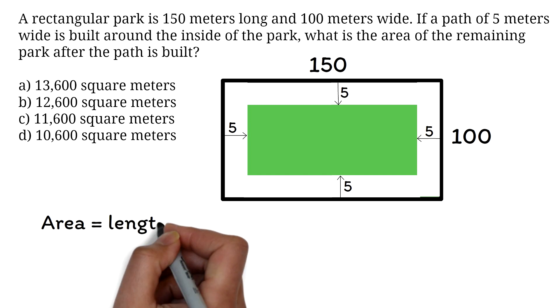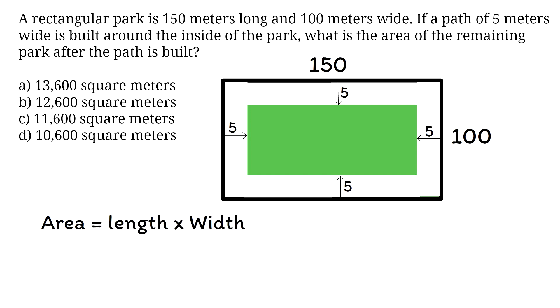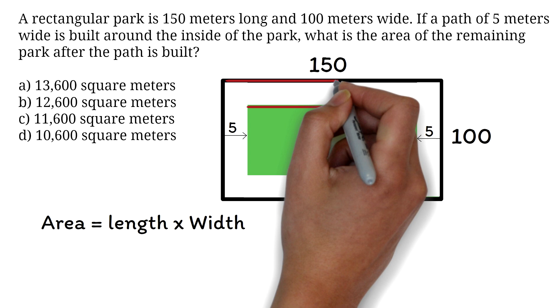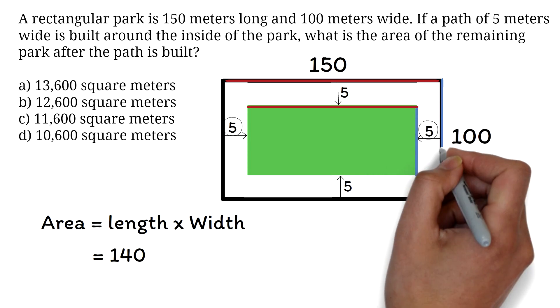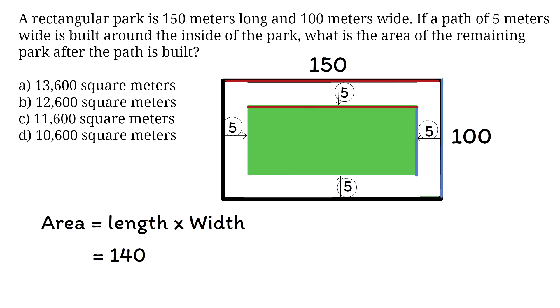Area of a rectangle is length times width. The new length of the park will be the 150 minus this 5 and this 5. So, the length is 150 minus 10, which is 140 meters. The new width is 100 minus this 5 and this 5. The width is 100 minus 10, which is 90 meters. We multiply. 140 times 90 is 12,600. So, the correct answer is B, 12,600 square meters.